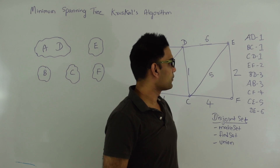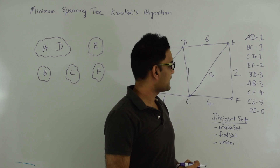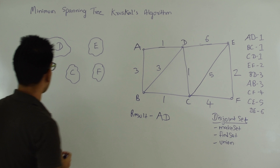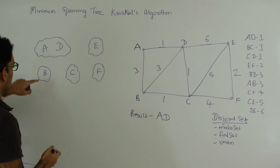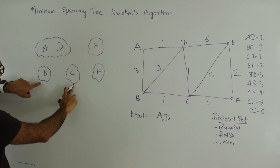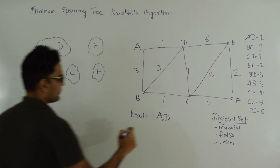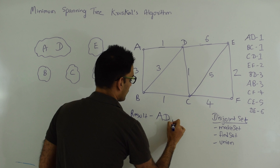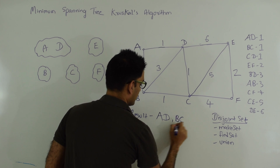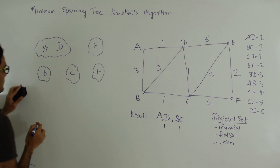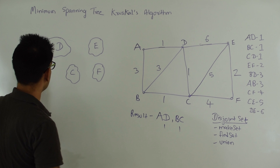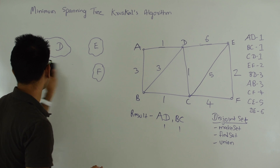Then we're going to pick the next edge BC. B and C are again in two different disjoint sets, so BC is also going to be in the final result. And we're going to merge B and C using the union operation of disjoint set.